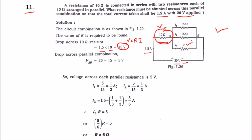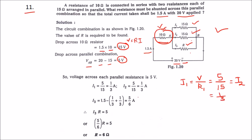The voltage across the parallel resistance combination is the supply voltage minus the voltage across the 10 ohm resistor. Therefore V_ab = 20 minus 15 = 5 volts. The voltage across all three parallel resistances is 5 volts. Now we calculate i1 and i2 using this voltage. i1 = V / R1 = 5 / 15 = 1/3 A, and similarly i2 = 1/3 A.